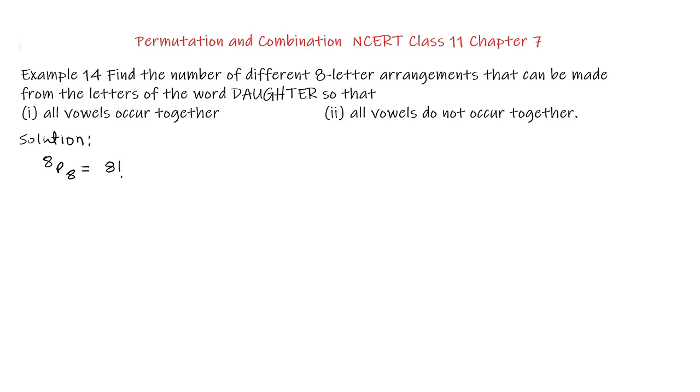DAUGHTER has 8 letters and all are different. So for the total number of arrangements of 8-letter arrangement is 8P8 equal to factorial 8.